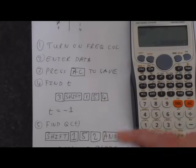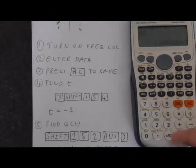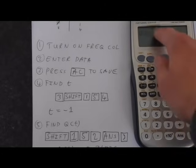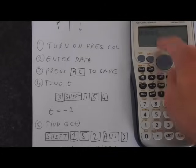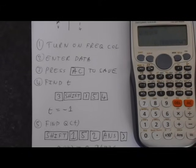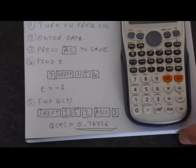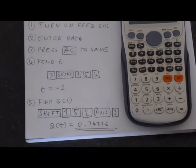We want to access our answer memory. That's the last answer we got, which is the one sitting here. We just press the ands button. That goes there. And for good practice, we'll close the brackets. And then press equals. And we get Q of T is 0.34 and so on.